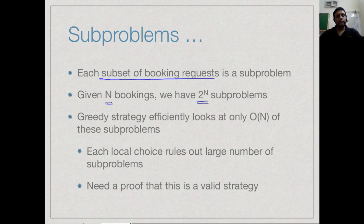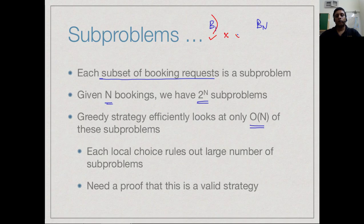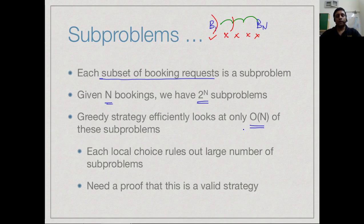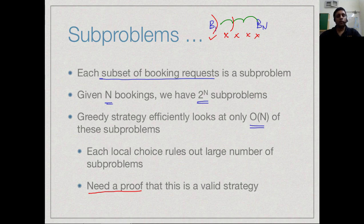How many sub-problems are there? With n bookings, every possible subset is a sub-problem — so we have an exponential number of sub-problems. In principle we have to look through all these exponential possibilities to find the best allocation. What the greedy strategy does is effectively cut down this exponential space into a linear space: we sort by earliest finishing time, pick the first, rule out a few, and repeat — at most looking at order n sub-problems. Since this is such a drastic reduction from 2^n to order n, there is a question of whether we have overlooked some sub-problems. That is why in a greedy strategy you need to prove that what you are doing actually produces a correct solution.